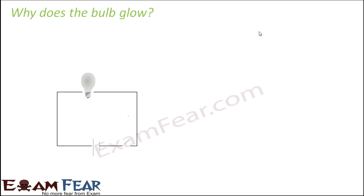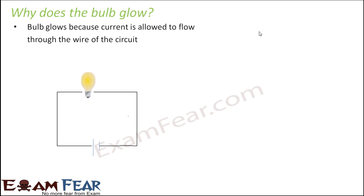The next question is: why does the bulb glow? We know the bulb glows when the circuit is complete, but why? The bulb glows because current is allowed to flow through the wire of the circuit. The key word is 'allowed' — it is possible that certain materials might not allow electrons or current to pass through them.